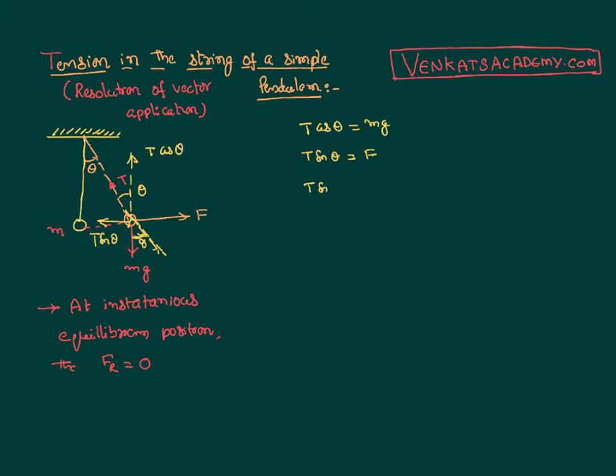Let us divide them. T sin theta by T cos theta equal to F by mg. T and T gets cancelled. So tan theta is simply F by mg. So I can calculate how much horizontal force is applied if I know the angle and if I know the mass of the body as mg tan theta.